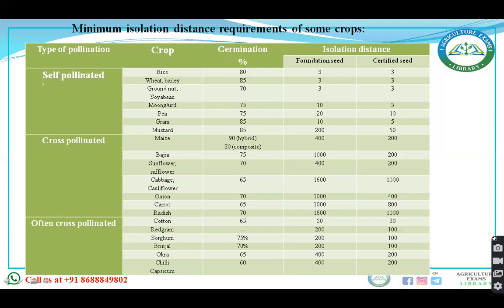For seed moisture content during storage: wheat, barley, and rice require 10 to 12% moisture. Pulses require 8 to 10%. Oilseeds and spices require 6 to 8%.